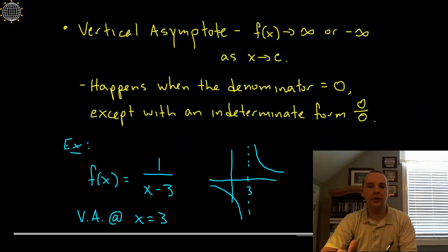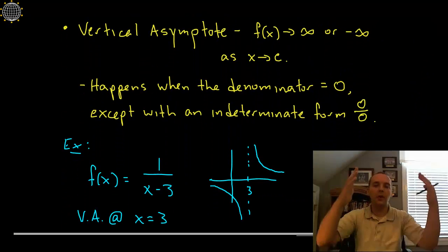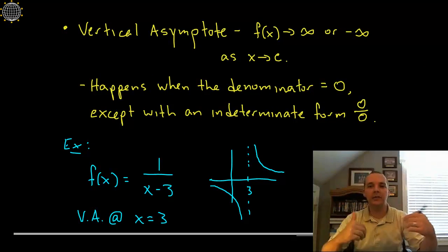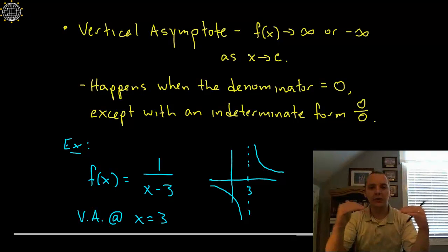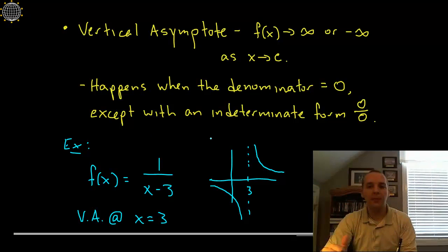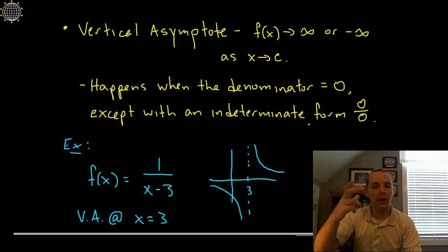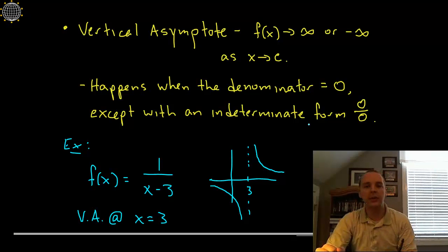The vertical asymptote, this is a place where the function will blow up to infinity or to negative infinity as you approach some constant. Now this happens when the denominator equals 0 except if you're getting an indeterminate form that's like 0 over 0. Often times that will be indicative of like a common factor that would cancel and so on a graph that wouldn't be an asymptote that would be one of those holes in the graph if you remember those from when we studied limits.